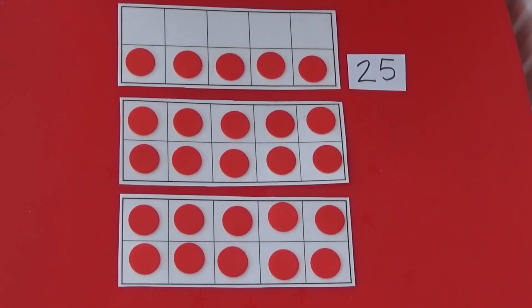And here I have filled two tens frames and have five counters in a third tens frame. So the number I am representing is twenty-five.